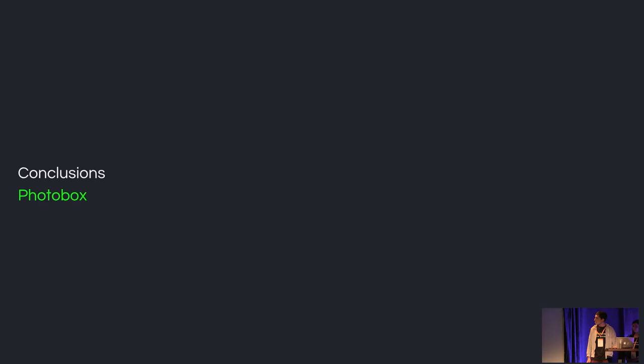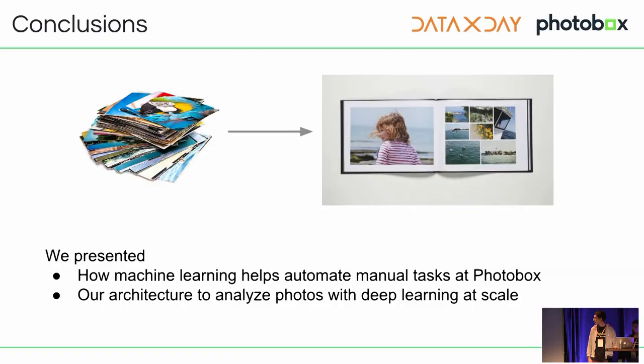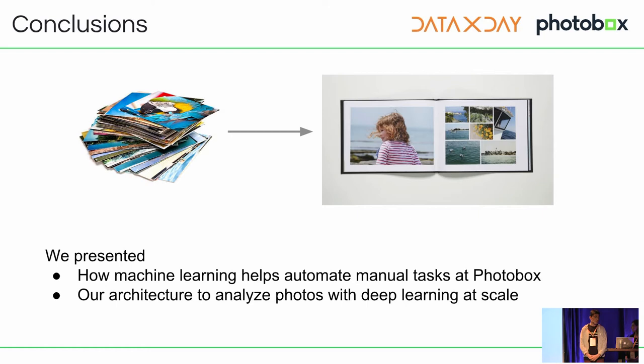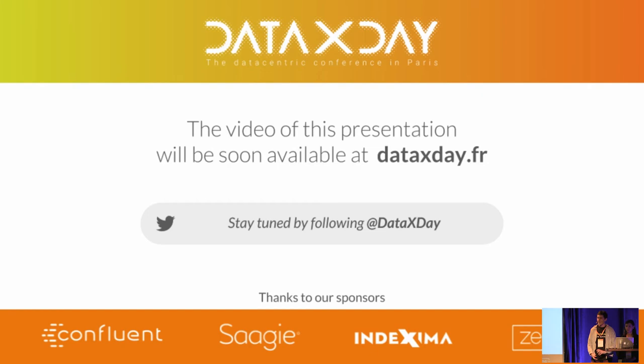In conclusion, machine learning helps automate manual tasks at Photobox. Our architecture is simple but manages to analyze the billions of photos we receive every year using deep learning models. This is functional for us. That's all for our presentation — if you have questions, now is the time. Thank you.